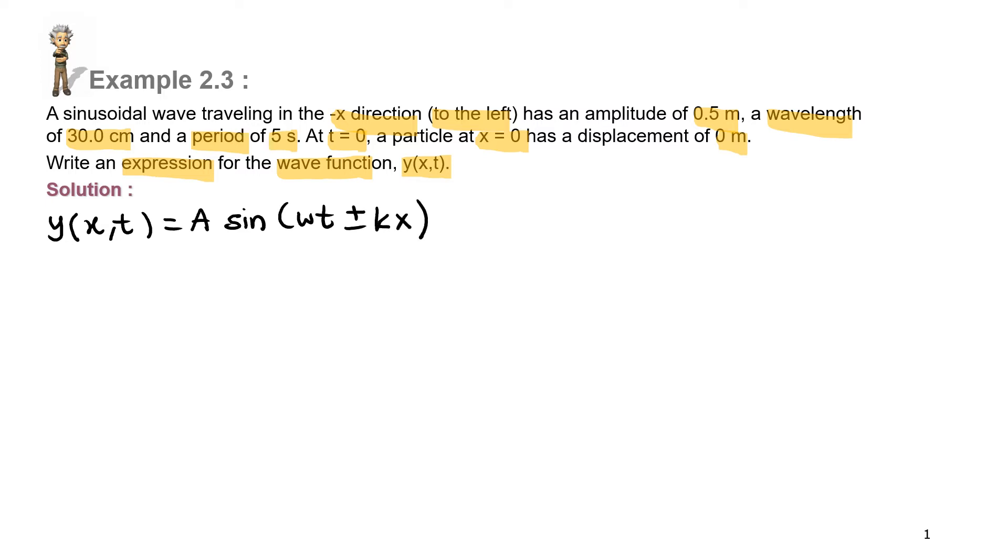So, apa yang perlu kita cari adalah kita perlu cari value A, amplitude, omega, wave number, dan juga direction of the wave. So, di amplitude, kita dapat daripada soalan, which is A, amplitude is equal to 0.5 meter.